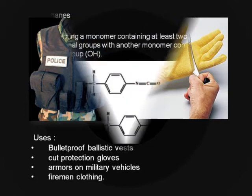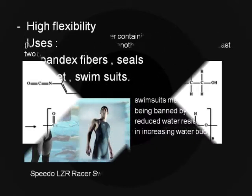In the 2008 Beijing Olympics, swimsuits made from polyurethane made a profound impact when Olympic legend Michael Phelps broke several records that may not be broken for many years. Polyurethane is made by reacting a monomer containing at least two isocyanate functional groups with another monomer containing at least two hydroxyl groups, and the product formed is highly flexible.